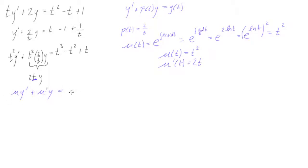Now this is quite obviously the result of a product rule. So another way we can write this is just by saying μy, the derivative of μ times y, right? If we take the derivative of μ times y, by the product rule, we would get this.